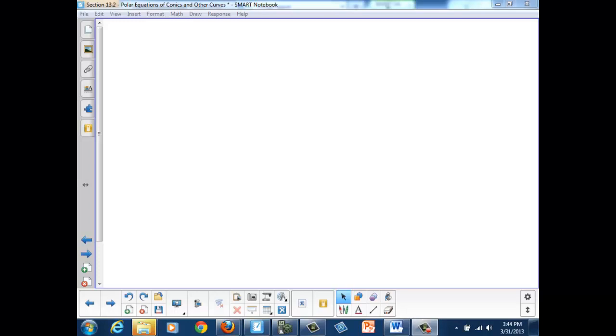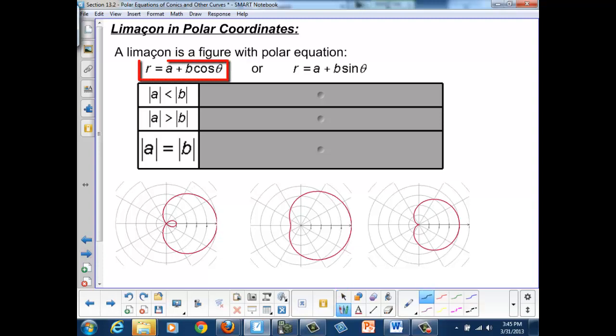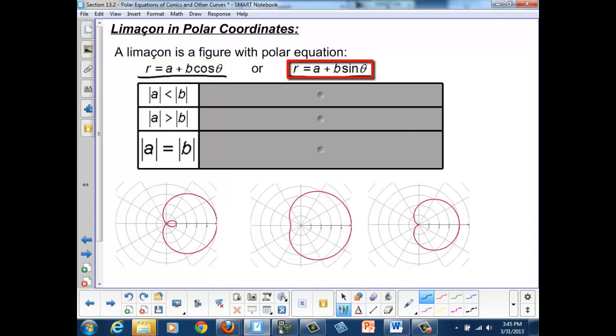Now we're going to take a look at a few special types of graphs that are generated using polar expressions. The first one we're going to look at is called a Limason. A Limason has this standard format for the equation: r equals a plus b cosine theta, or r equals a plus b sine theta.